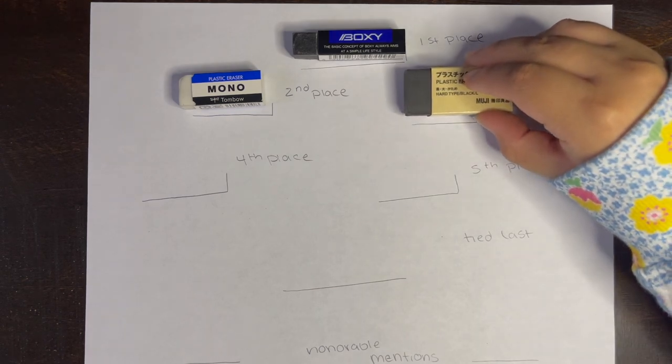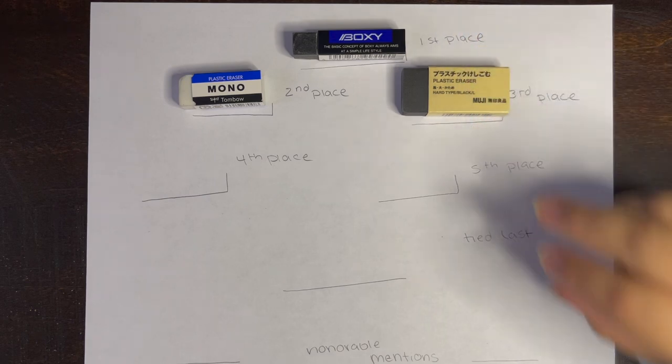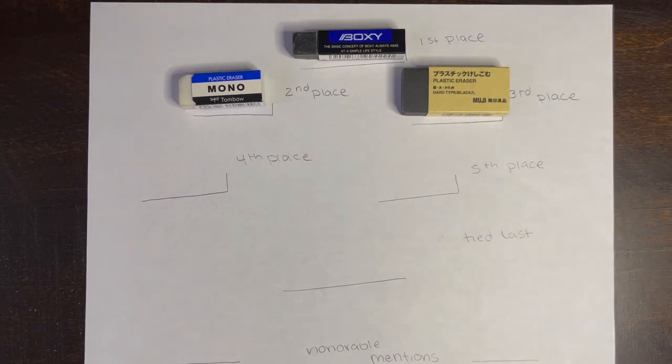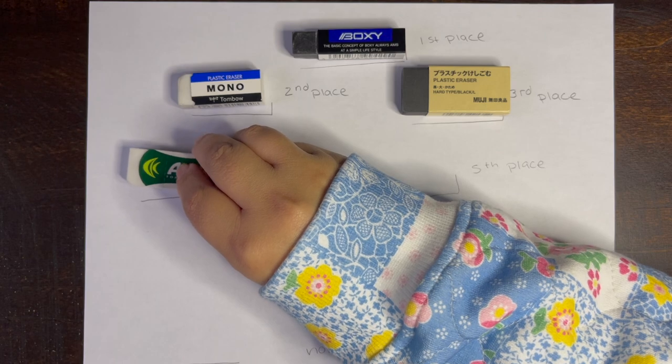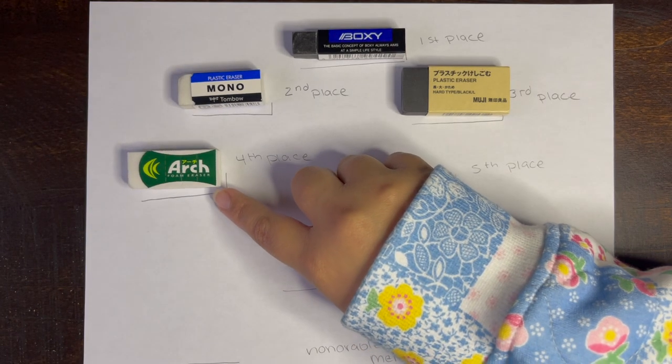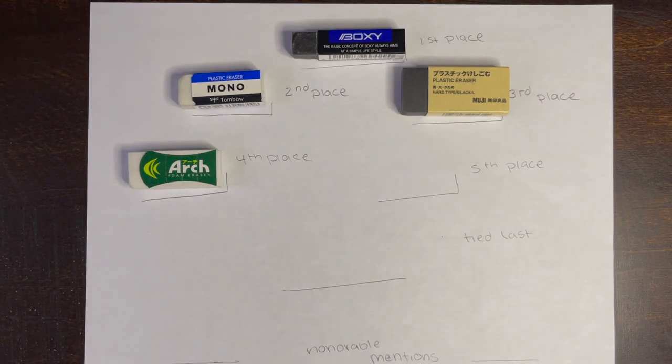And third place is Muji because it is black and it erases so well. It doesn't leave much dusting and it is big, but if you want a small one then you can get a small one as well on Muji. And in fourth place is this Arch eraser. This one is also really good. The only downside is that it is white, but if I get that black one then it may not be in fourth place.